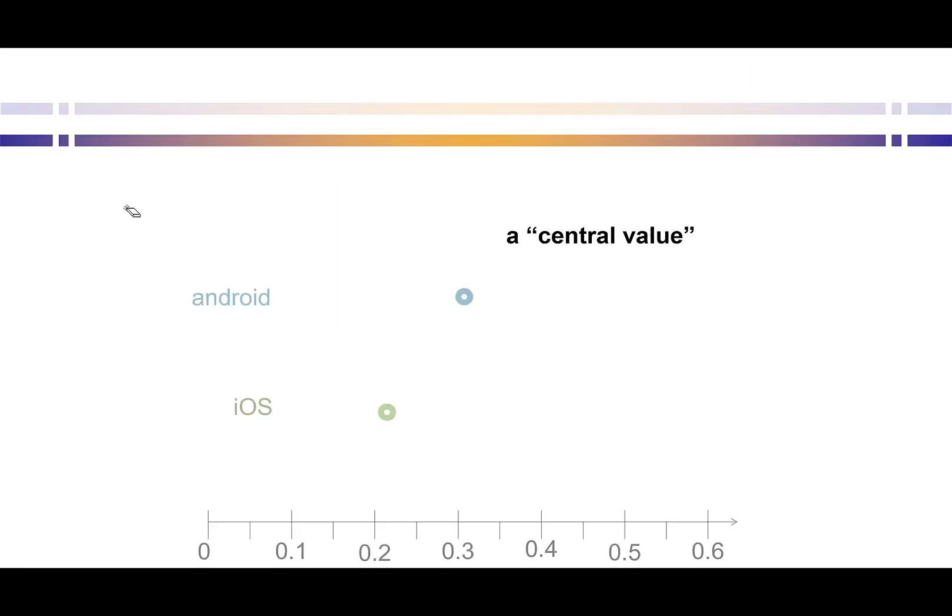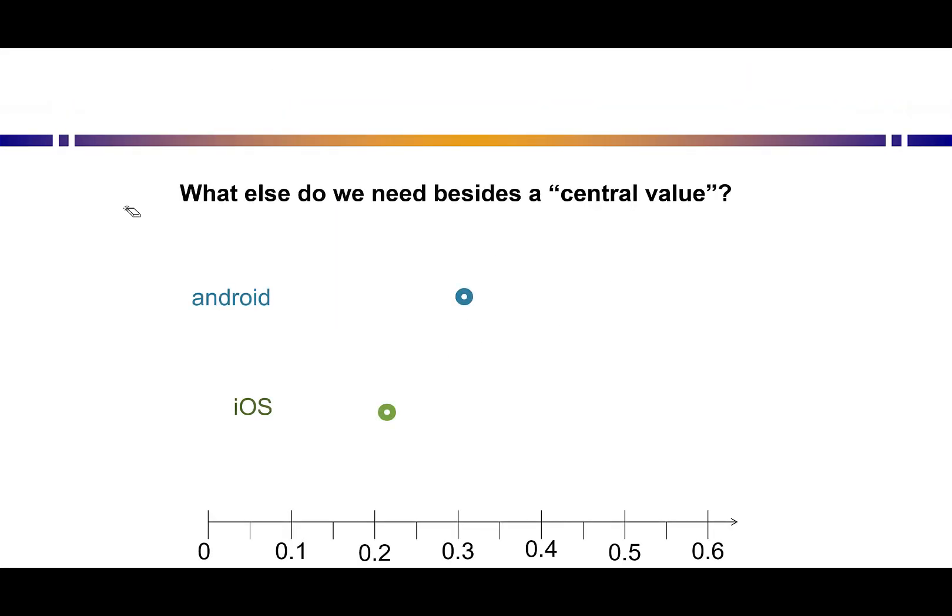Let's see what that looks like graphically. We can see our iOS and our Android proportions each having their central value on this chart. Well, they each also have a spread of uncertainty around that central value.